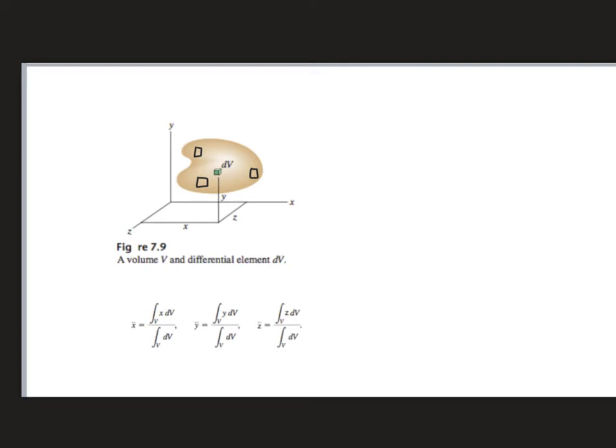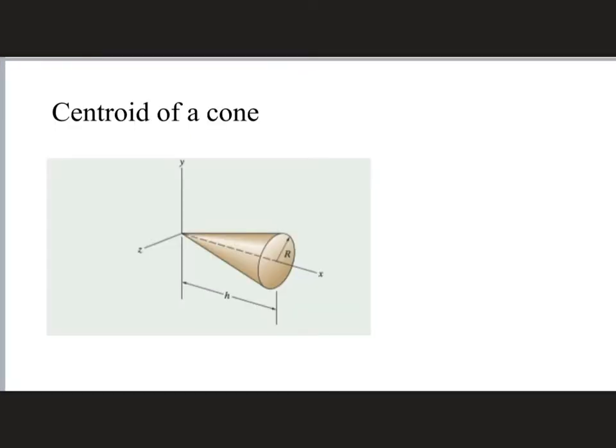And then we can average together all the x positions. That will give us the x-centroid. We can average together all the y positions for the y-centroid, all the z positions for the z-centroid. And the formula is pretty much exactly the same that we had before, but instead of integrated over dA, we have to integrate over dV.